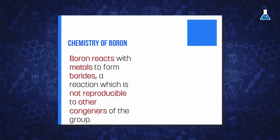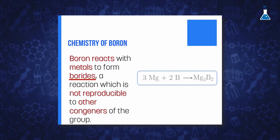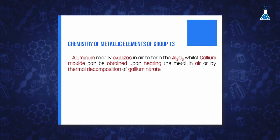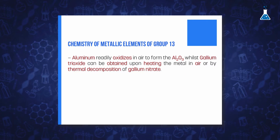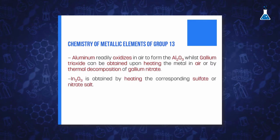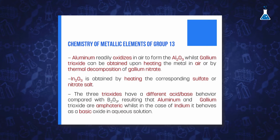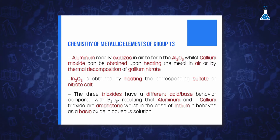A reaction that becomes even more apparent is the reaction of boron with metals to form borides. This reaction is not reproducible for aluminum, gallium, and indium. Those metals form the respective trioxide compounds when heated with oxygen; in the case of aluminum and gallium, or the nitride or sulfide salt for indium.